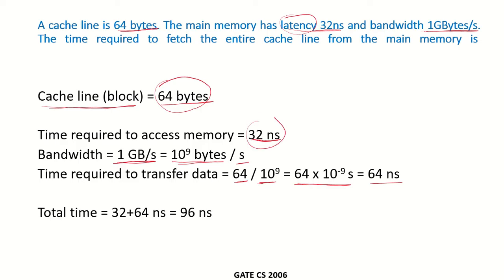The time to access main memory is 32 nanoseconds, plus the time required to transfer the data which is 64 nanoseconds. So the total time required would be 96 nanoseconds.